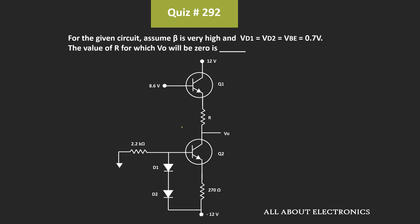For the given circuit, we have been asked to find the value of R such that Vout is equal to 0. We have been given that the value of Vbe for these two transistors, as well as the voltage drop across diodes D1 and D2, is equal to 0.7V. We have also been given that the value of β for the transistor is very high. Considering this, let's find the value of R.